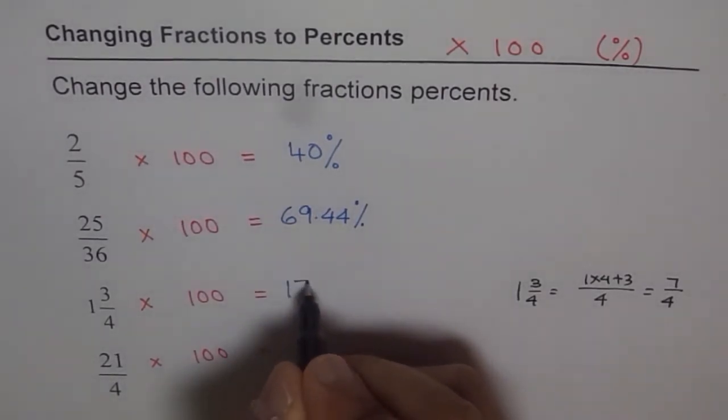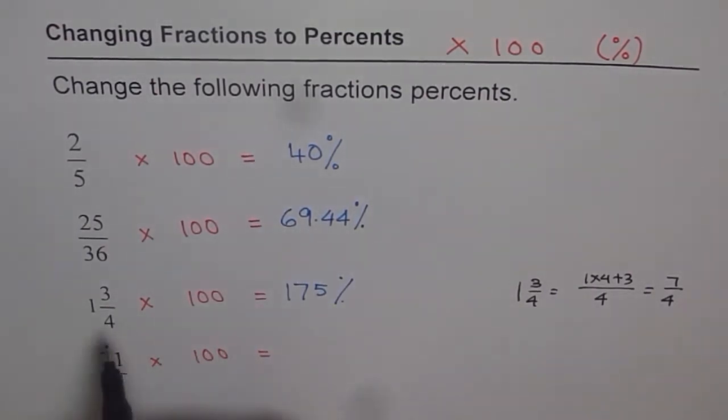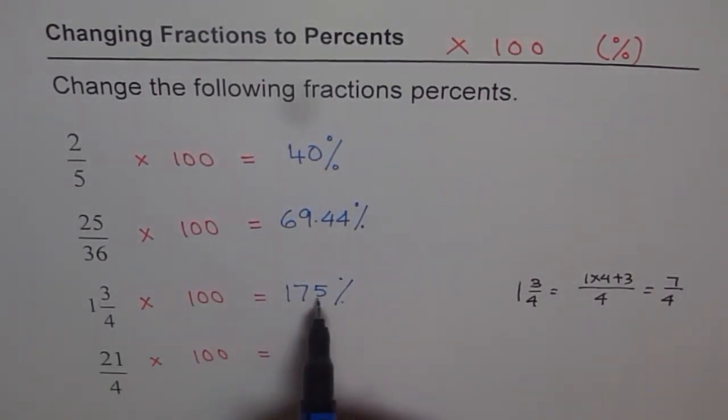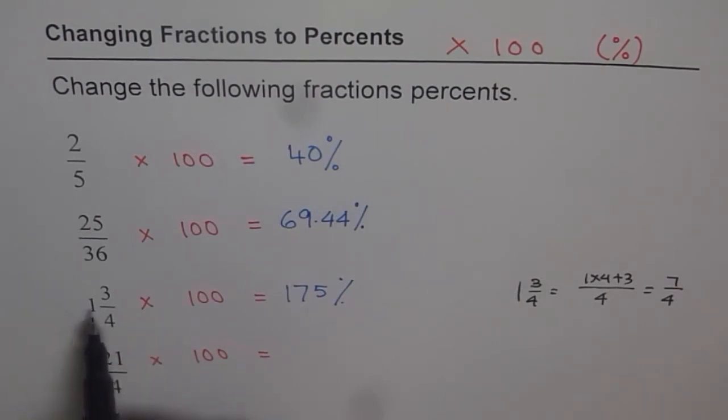So it was expected. It is more than 100 percent. 1 whole, that means 100 percent plus 3 fourths, which is 75 percent. So you add them too. 1 whole, 100 plus 75. 175 percent.